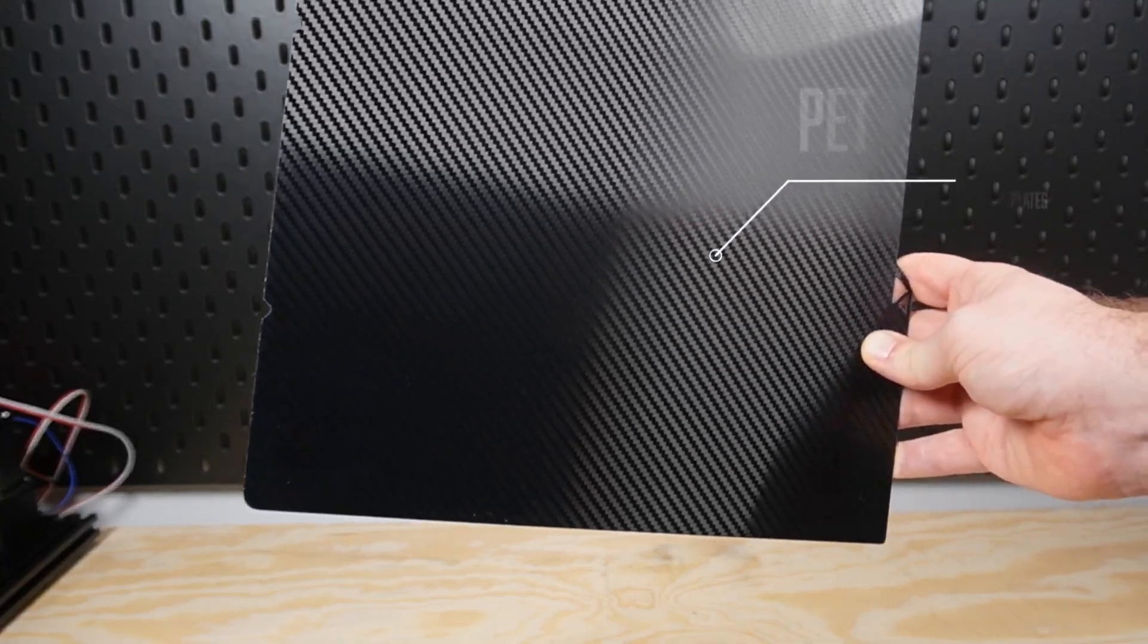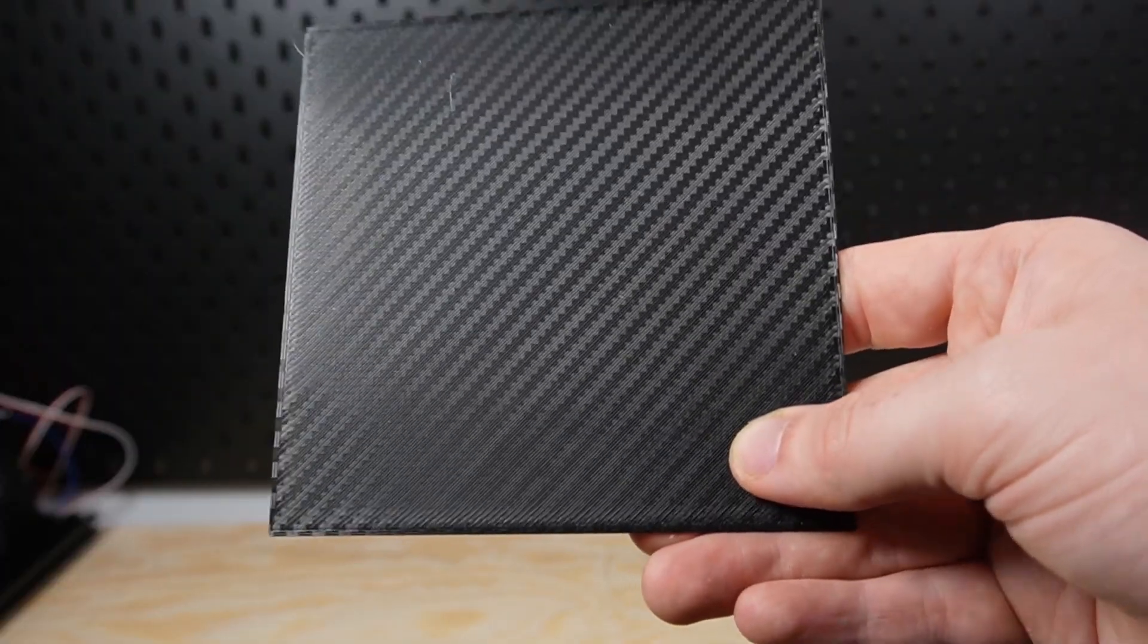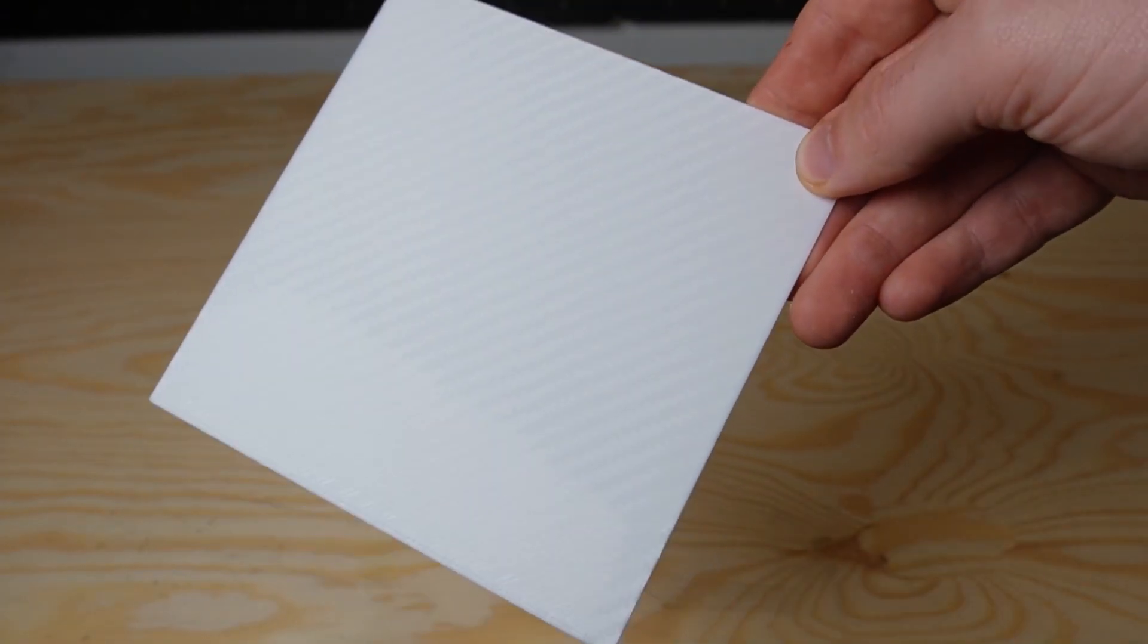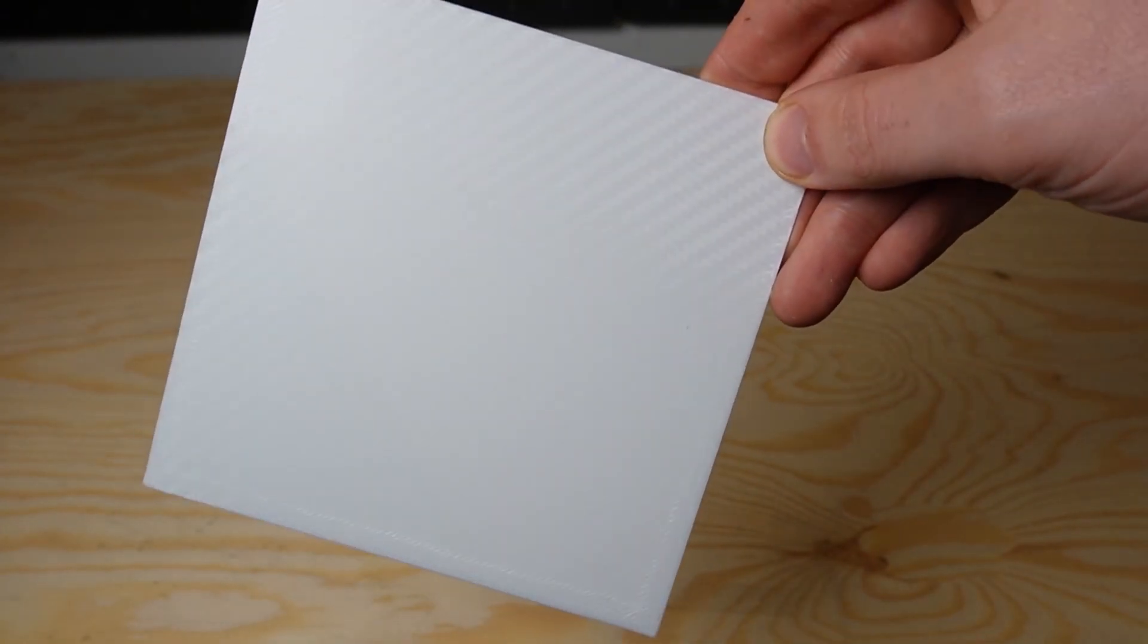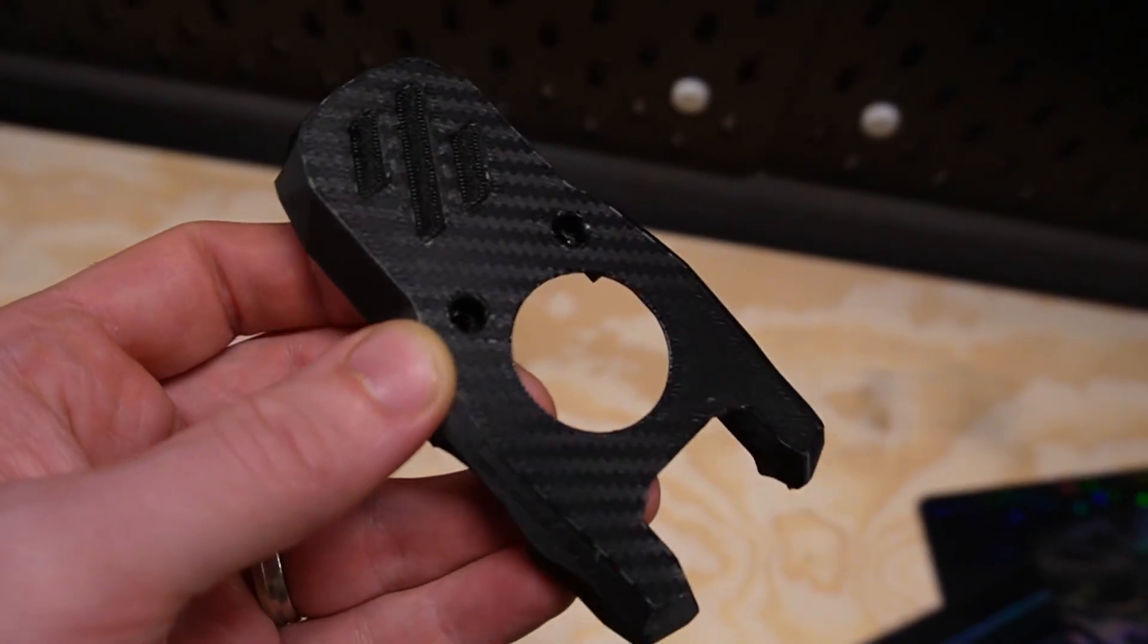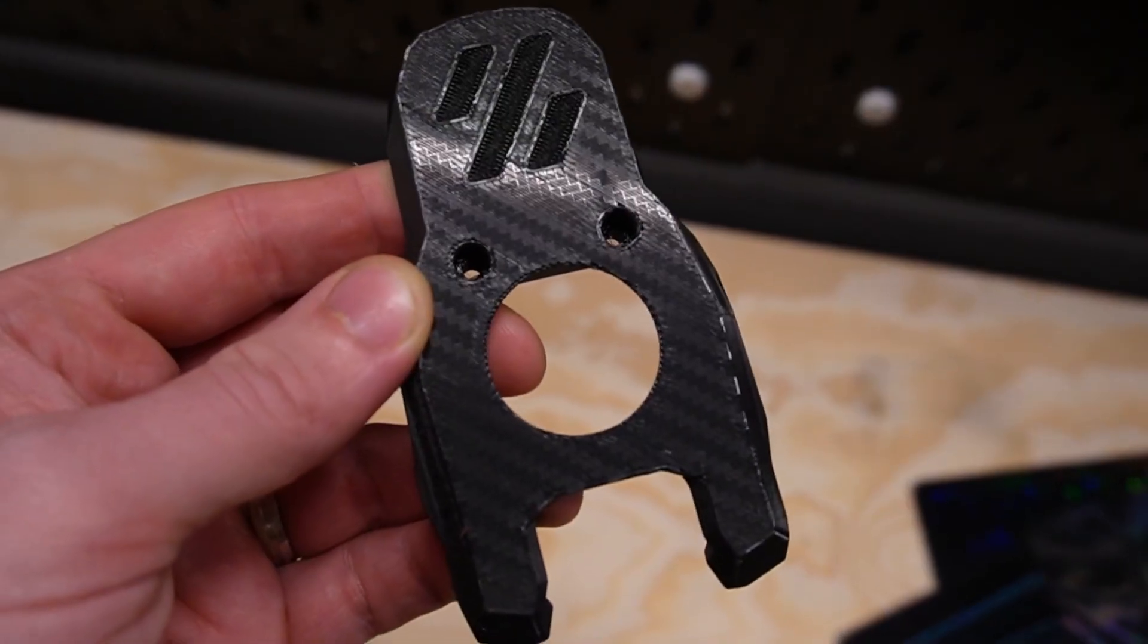This plate transfers a classic twill pattern that mimics real carbon fiber. Fine diagonal lines create depth, a sense of robustness, and technical charm. With dark PLA or ABS, you get a rich, satin matte sheen. It's ideal for functional RC parts, machine housings, or gadgets with a serious engineering vibe.